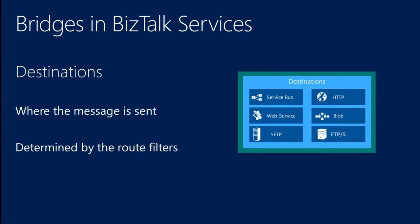Destinations are where we finally send messages to after we finish processing them through the pipeline. The message will reach only one destination. You may configure multiple destinations for a bridge, but the message is going to get routed to only one destination, and which destination it's routed to depends on route filters. These are the current six destinations we support out of the box: Service Bus — which includes service bus queues, topics, and relays — HTTP web services, web service using WCF configuration, Azure Blob, SFTP, and FTPS.